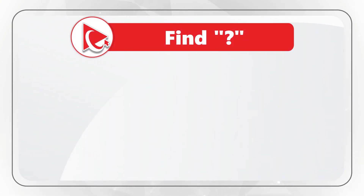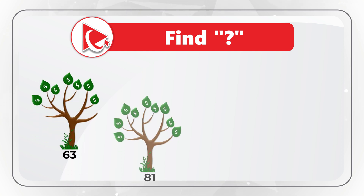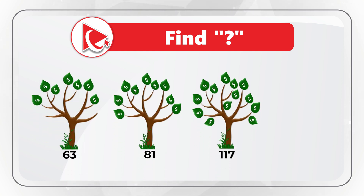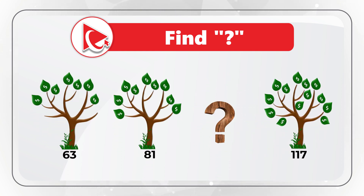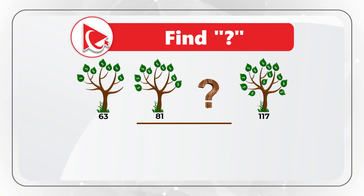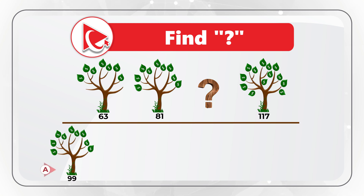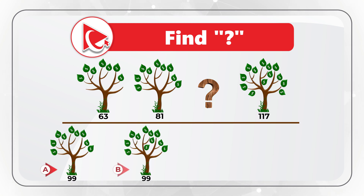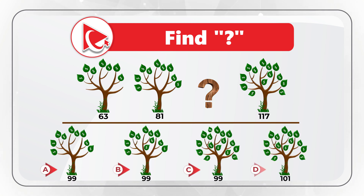Have you ever dreamed of finding a tree where money grows on the branches? Now is your opportunity. You're presented with three money trees and the fourth one is missing. You have four different choices to find the correct money tree — choices A, B, C, and D. Take a close look to see if you can find the right matching one.